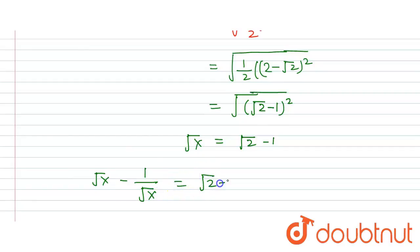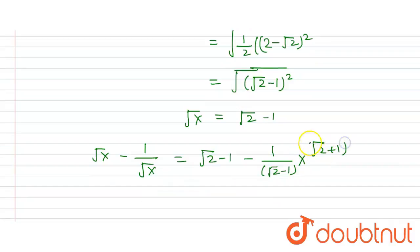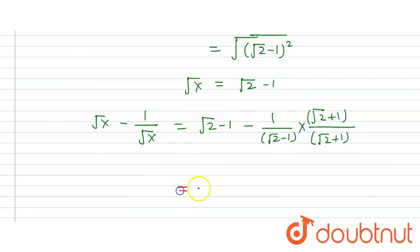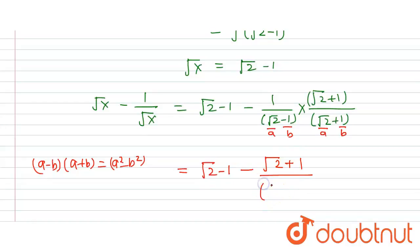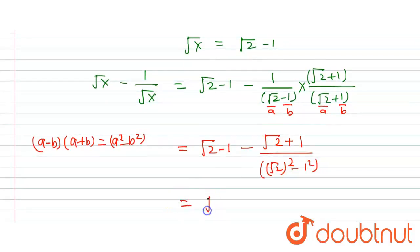Now we compute 1 divided by under root of x minus under root of x, substituting under root x equal to (under root 2 minus 1). Multiplying numerator and denominator by (under root 2 plus 1) and applying the identity (a minus b)(a plus b) equals a squared minus b squared, we simplify the denominator to (under root 2 squared minus 1 squared), which equals 2 minus 1 = 1.